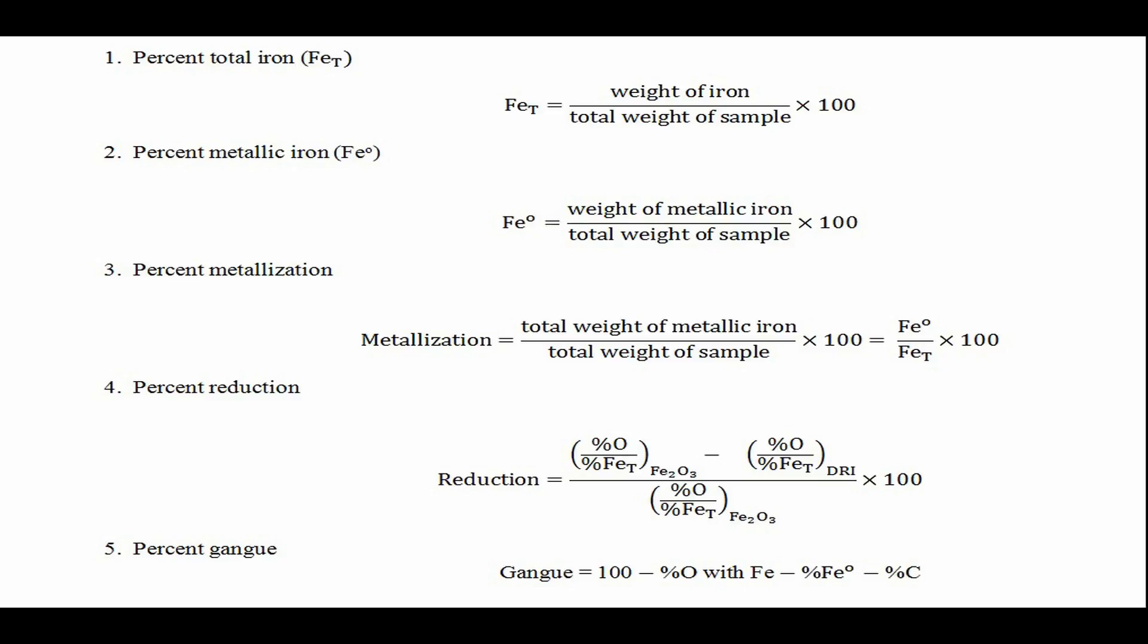Four: Percent reduction refers to the oxygen that has been removed in producing the direct reduced iron, in reference to the initial iron as hematite. This definition gives the state of the iron contained in the direct reduced iron.